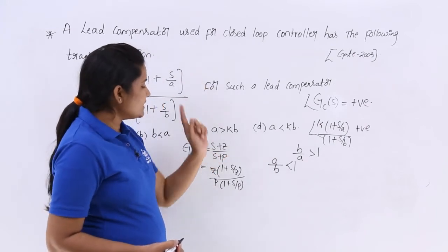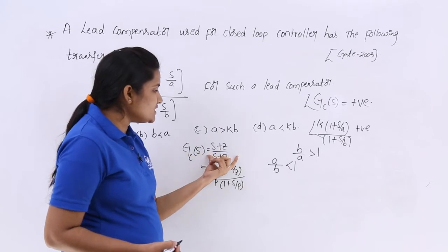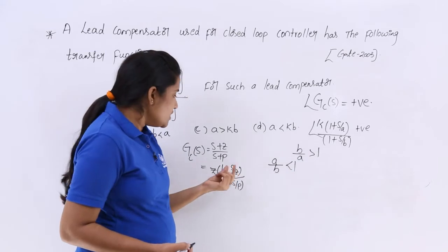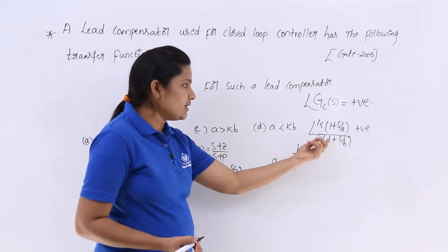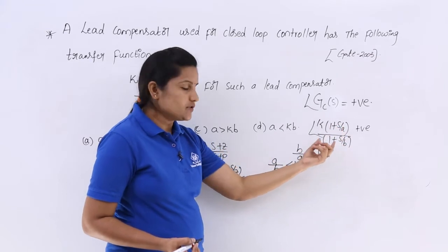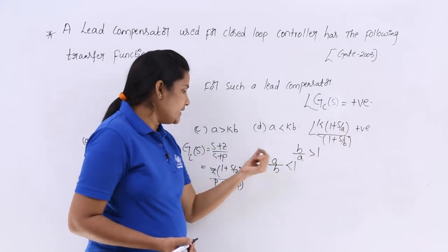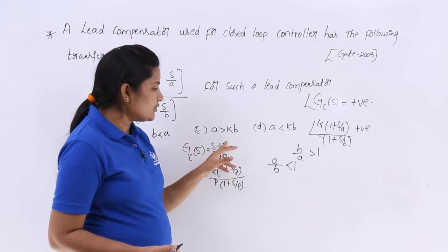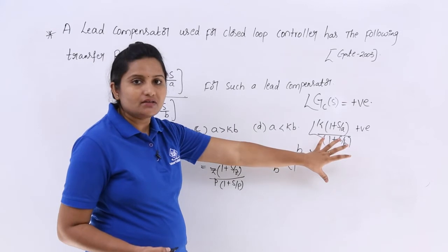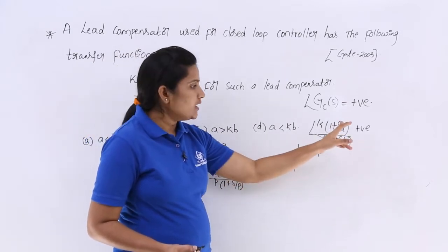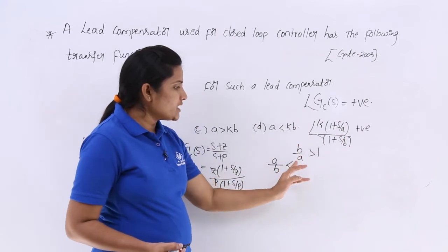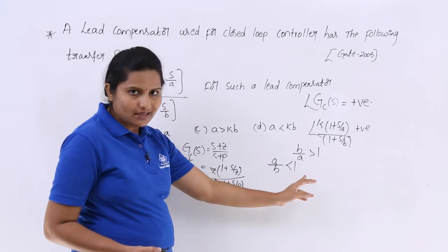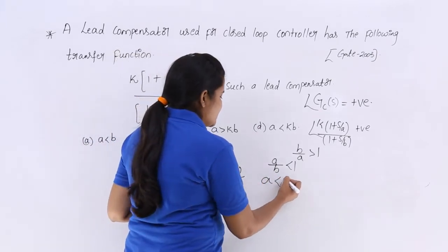Whenever they say this is a lead compensator, the angle of this transfer function must be positive — meaning pole by zero must be greater than 1. Here the pole is B and the zero is A, so B by A greater than 1, which implies A by B less than 1, and therefore A less than B.